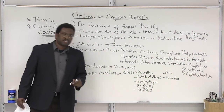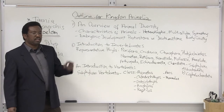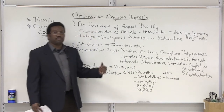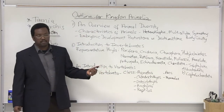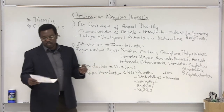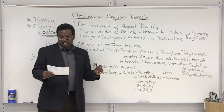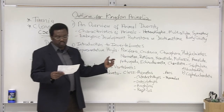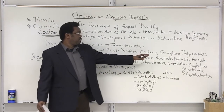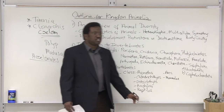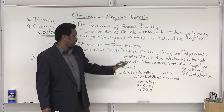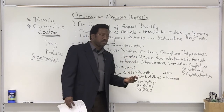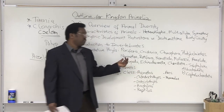Next, we have a very small group of another group of worms called Nemertia, known as the ribbon worms. Again, a very small group with only 650 species — probably the smallest group along with Ctenophora in terms of the number of species in the animal kingdom. Based on their name, they resemble ribbons.